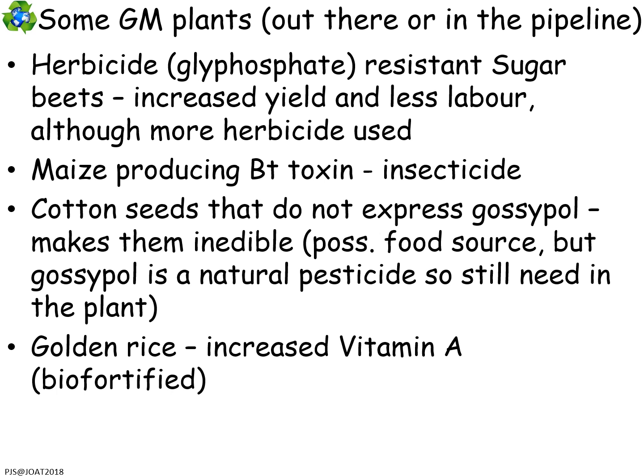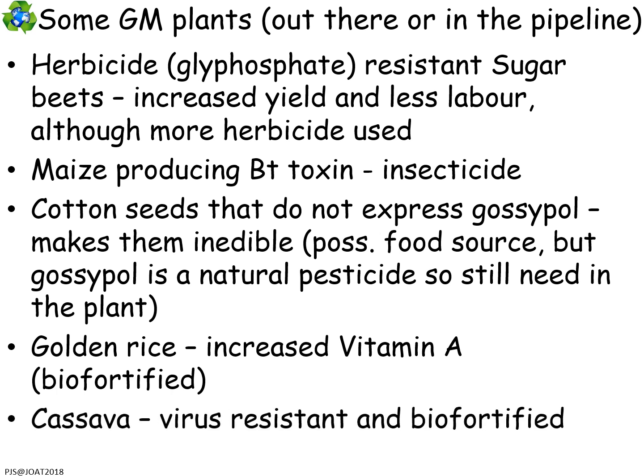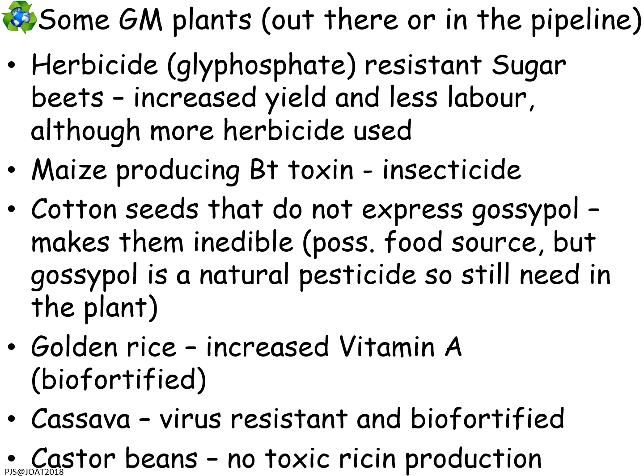Golden rice is another example you may have heard of, involving biofortification — modifying a plant to contain more beneficial compounds than it naturally would. Golden rice has been enhanced to contain more vitamin A, aiming to prevent vitamin A deficiency. Cassava is another crop on that list. There's also work to remove ricin, a toxin produced by castor beans. These examples give a sense of how GM technology can be useful and why we might want to pursue it.